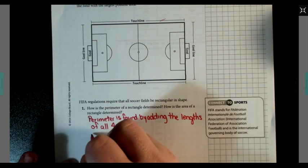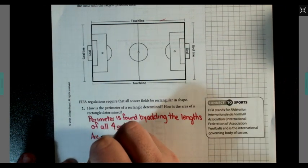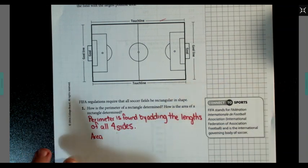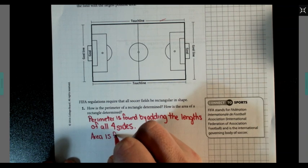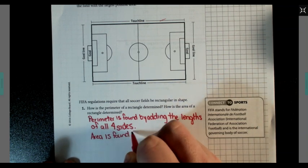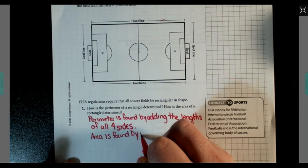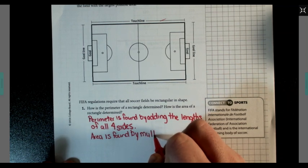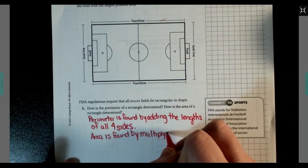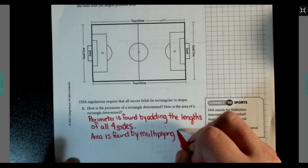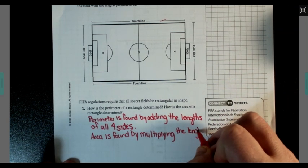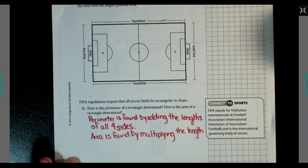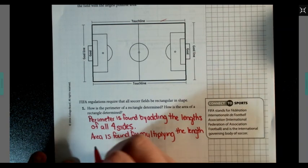Area is found by multiplying the length times the width.